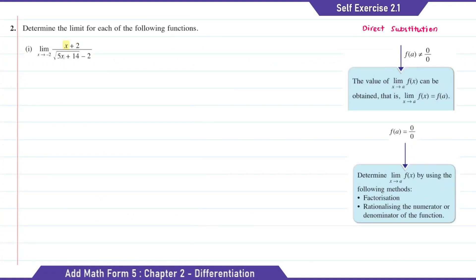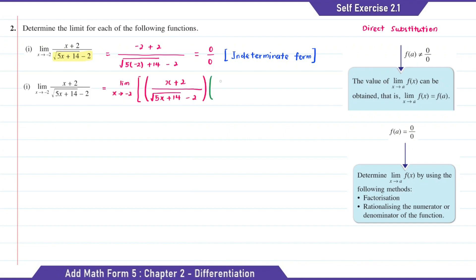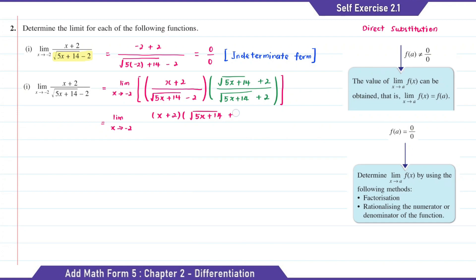Question I: here we're going to substitute x with negative 2 as x approaches negative 2. The answer of this is 0 over 0. To find the limit value for I, here we need to rationalize the denominator. The conjugate for the denominator will be square root of 5x plus 14 plus 2 over square root of 5x plus 14 plus 2.